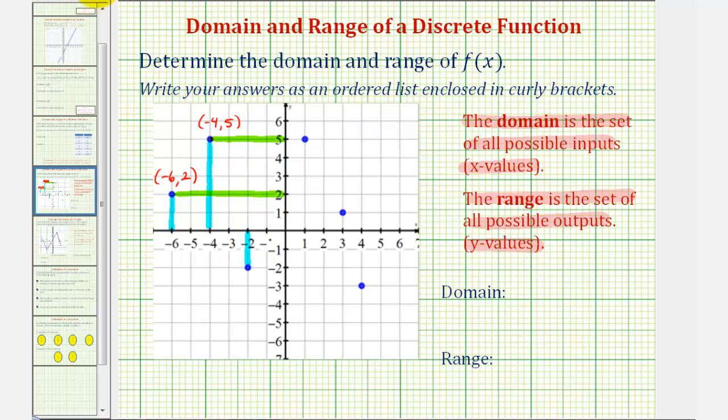Next we have the point (-2, -2). So negative two is in the domain, and negative two is also in the range.